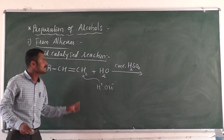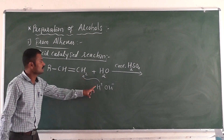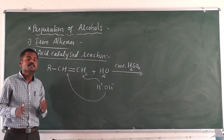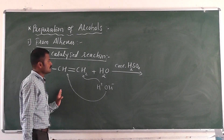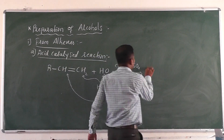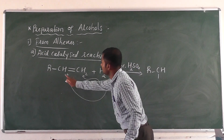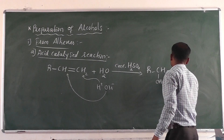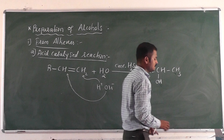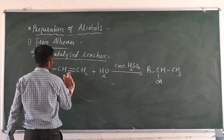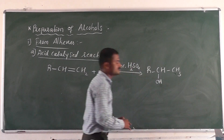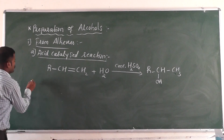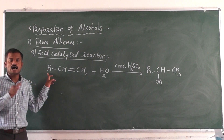The H⁺ ion attaches to the carbon containing the maximum number of hydrogen atoms. Then OH attaches to the carbon containing the double bond with the minimum number of hydrogen atoms. So the product is RCH(OH)CH₃ — this is the alcohol formed. When we take the alkene in the presence of acid with hydrolysis, addition of water gives an alcohol.